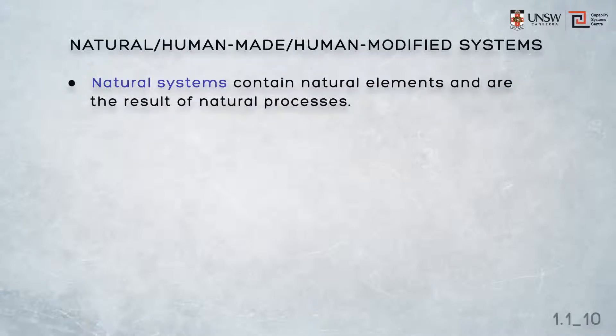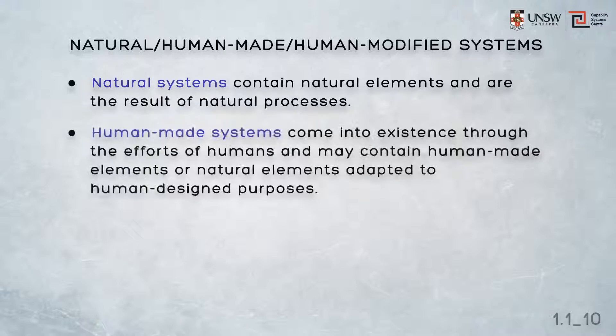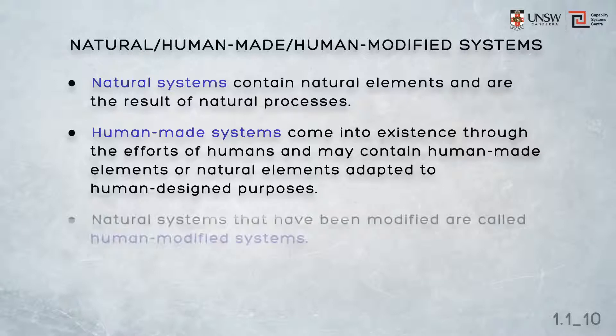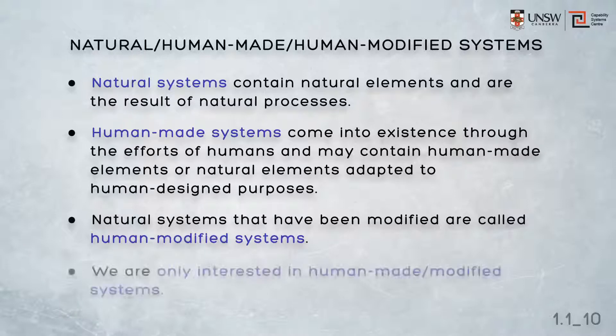Natural systems contain natural elements and are the result of natural processes. Human-made systems come into existence through the efforts of humans, and may contain some human-made elements, or perhaps some natural elements adapted to human-designed purposes. Natural systems that have been modified for human purposes are called human-modified systems. The systems engineering for natural systems has certainly not been conducted by humans, so we are only interested in human-made or human-modified systems.